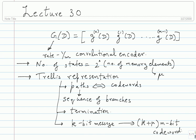So the code word is (k + mu) × m bits because of the all-zero to all-zero termination. One can list out all the possible codewords of the convolutional code by considering all possible messages, and you can think of it as a block code once you fix the message length. So I'm going to do one more example for a four-state encoder, which is easier to plot.